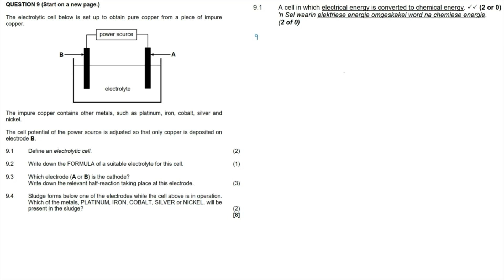Question 9.2: write down the formula of a suitable electrolyte for the cell. There were a number of options available, but all of them should have been some kind of soluble copper salt. The common answers would have been copper sulfate, copper nitrate, or copper chloride, but theoretically it could be any copper salt that is soluble in water.